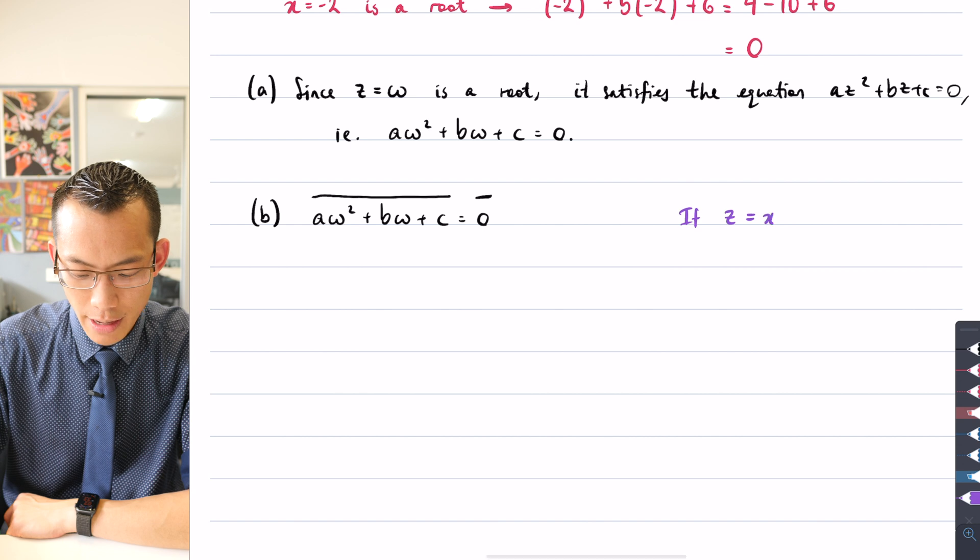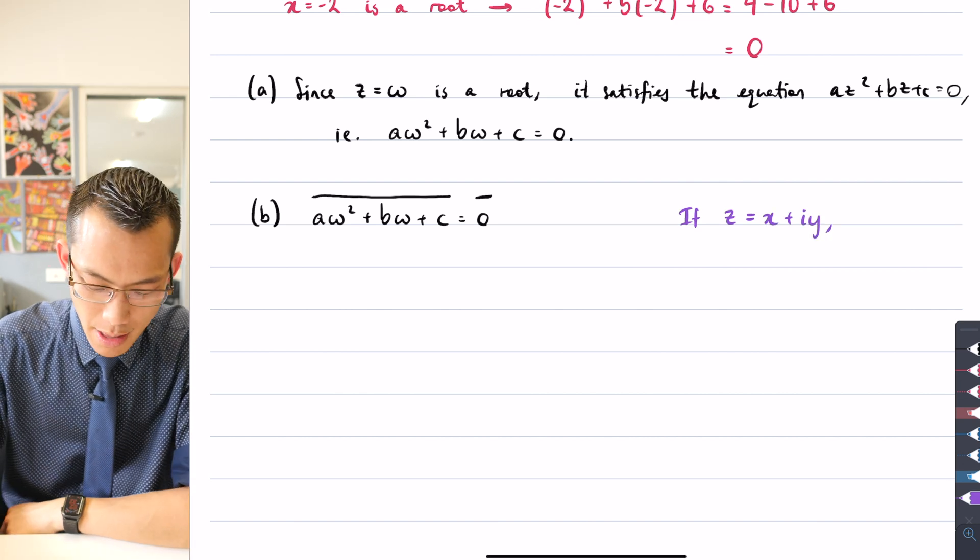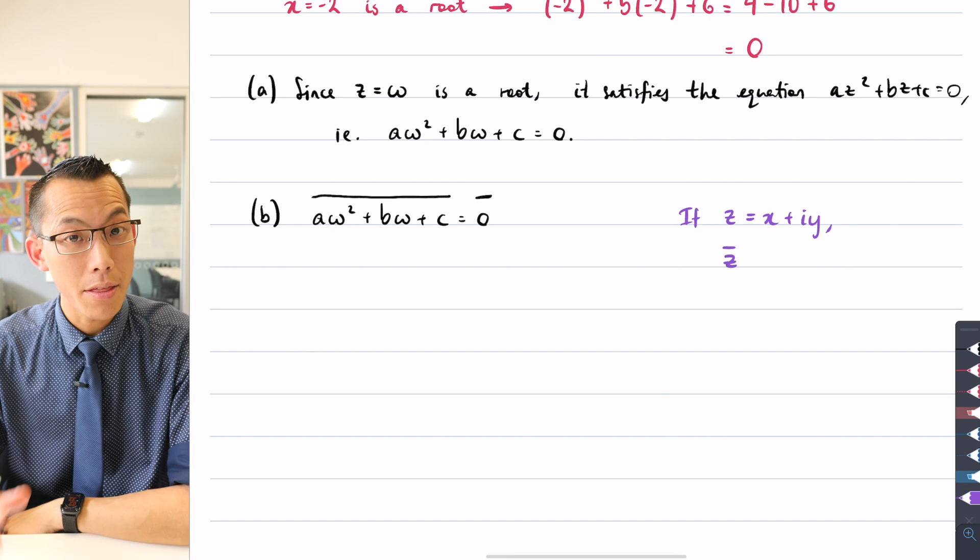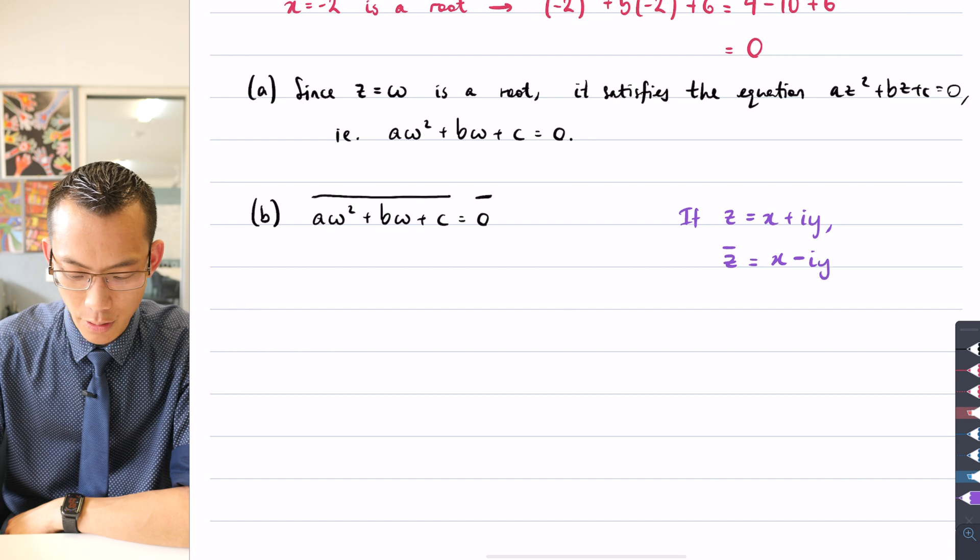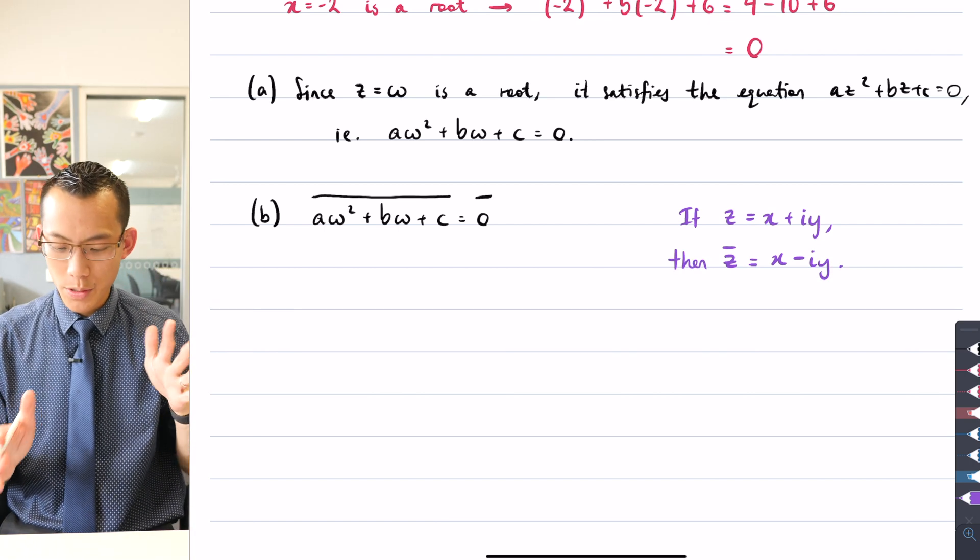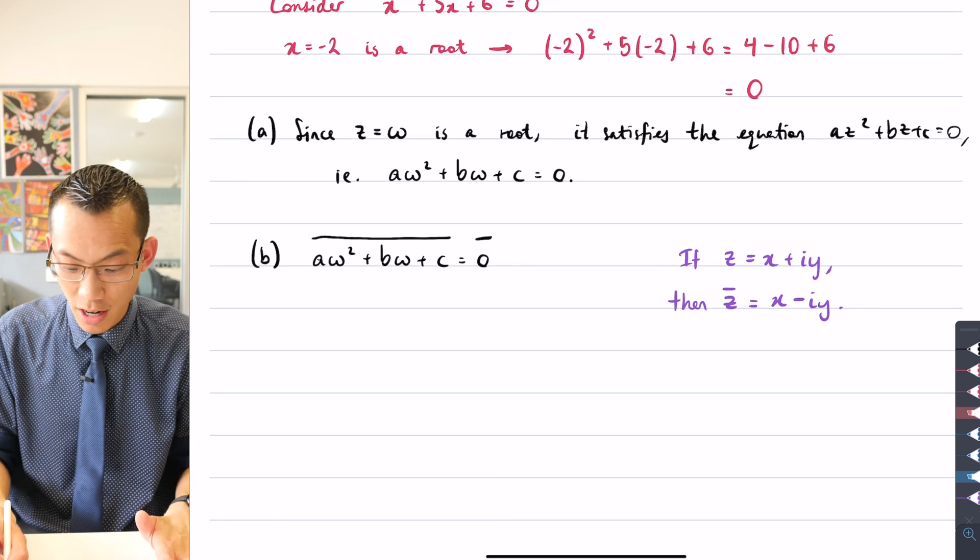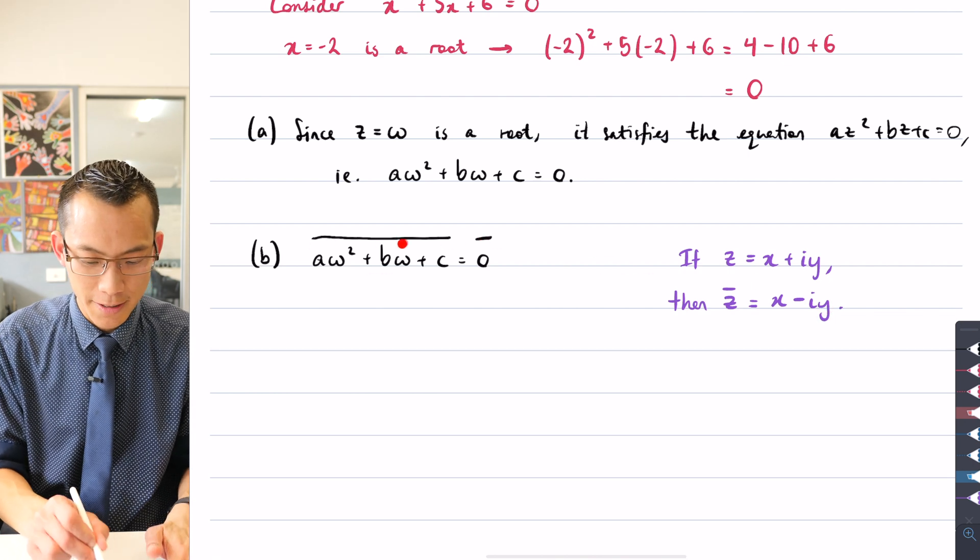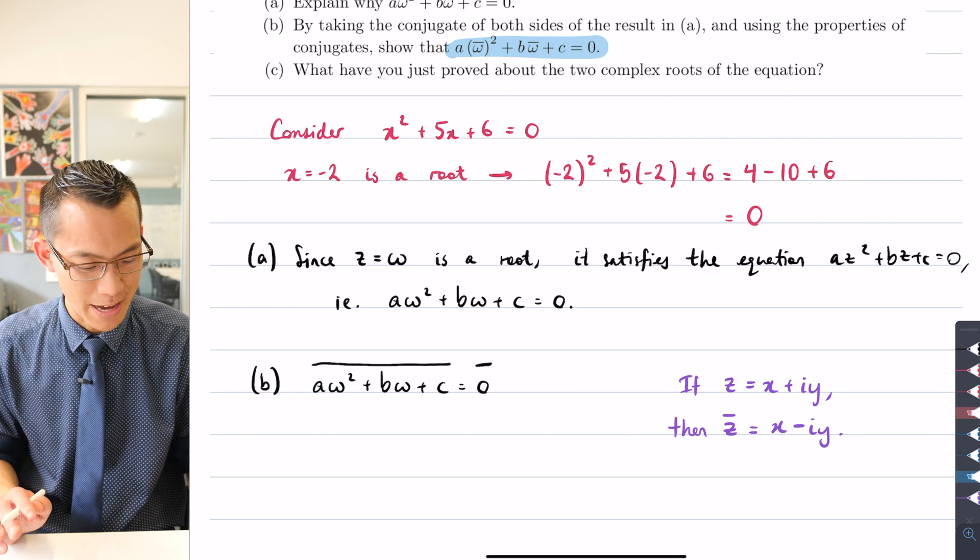...then we define z̄, the complex conjugate, to be x - iy. I'll say, if that, then this. So what we want to do is use this sort of definition and then some of the properties that come from this definition to get from here to our desired result. So how are we going to do that? There's a few different directions and a few steps we need to go through here. I'm going to go through them in an order that I hope makes sense to you.